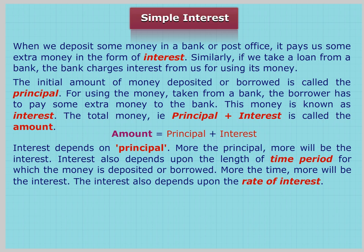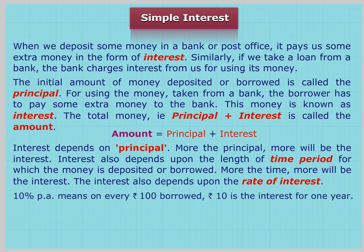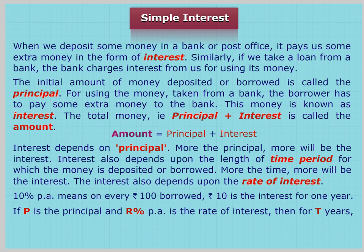Interest also depends upon the length of time period for which the money is deposited or borrowed — more the time, more will be the interest. The interest also depends upon the rate of interest. For example, 10% per annum means on every Rs. 100 borrowed, Rs. 10 is the interest for one year. If P is the principal, R is the rate of interest, and T is the time period, then Interest I = (P × R × T) upon 100.